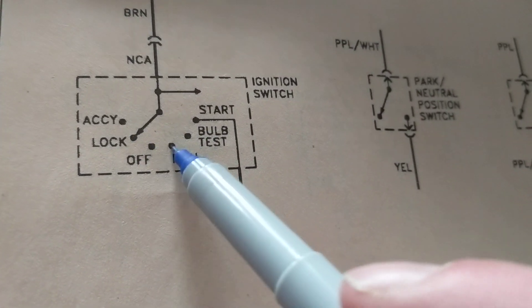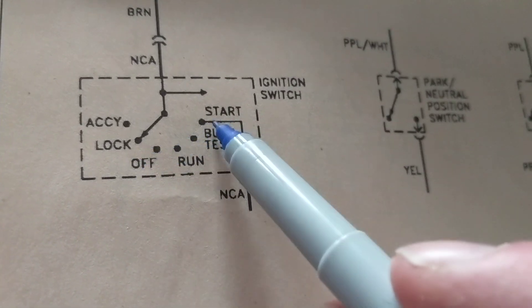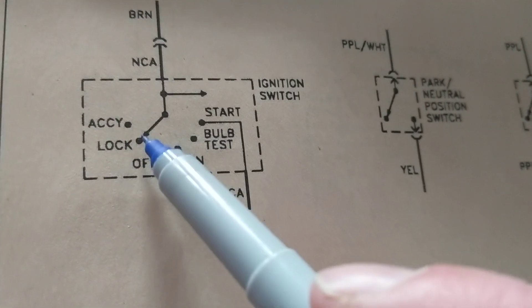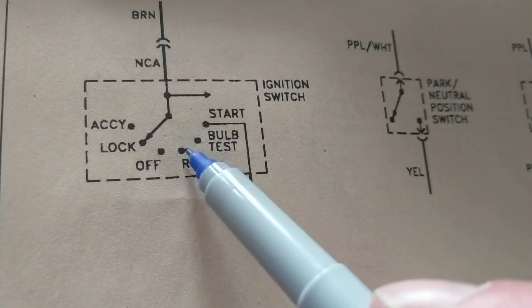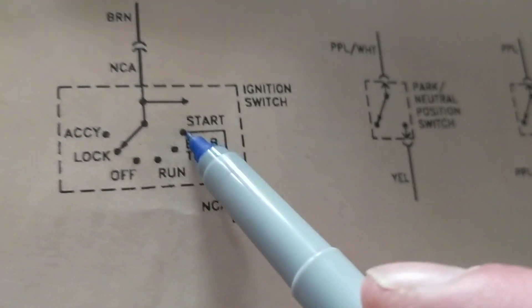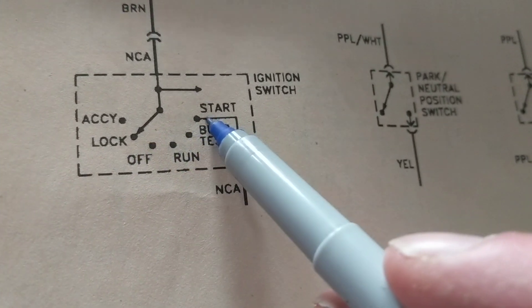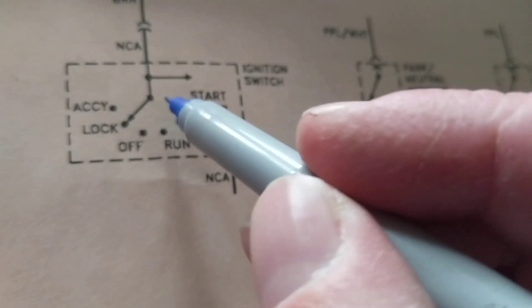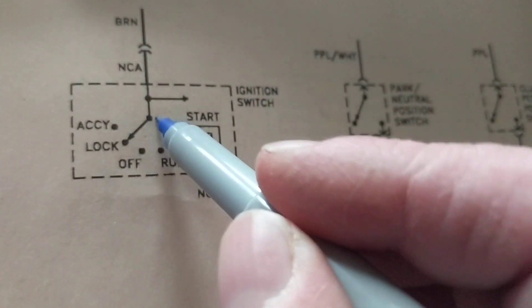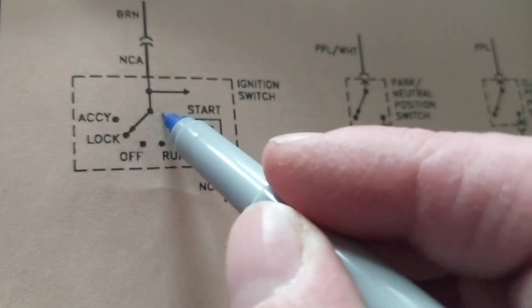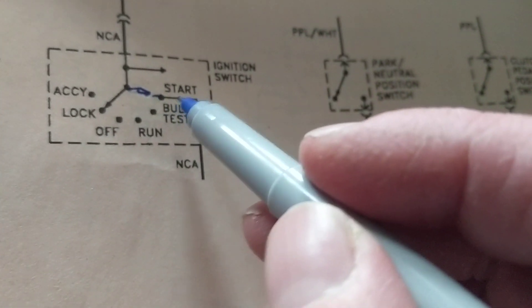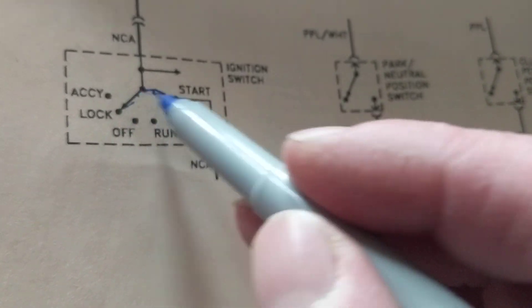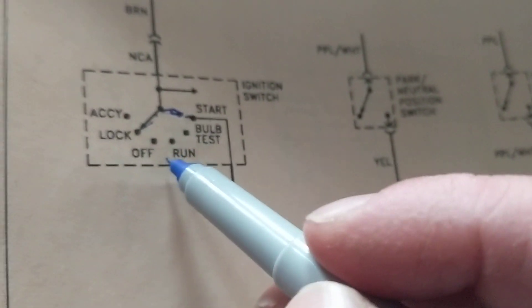How many more positions do I have to toggle this to get to here? This will go one position, two position, three position, four positions — four positions I have to toggle this to put it in the start position. So let's draw it in. Instead of being over here, it will be right here, in the start position. This is at the rest position.